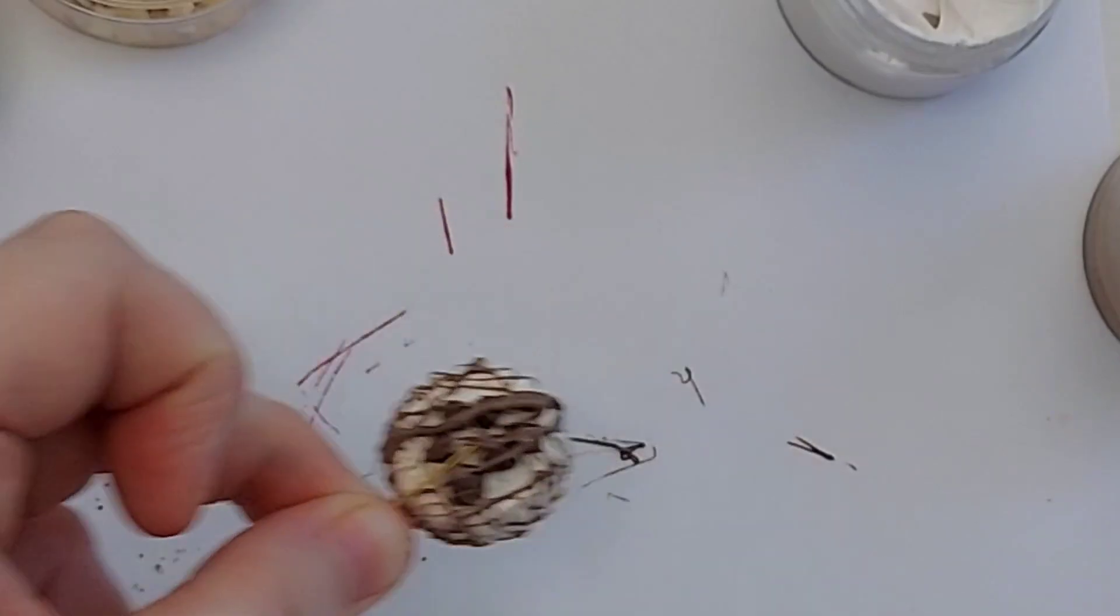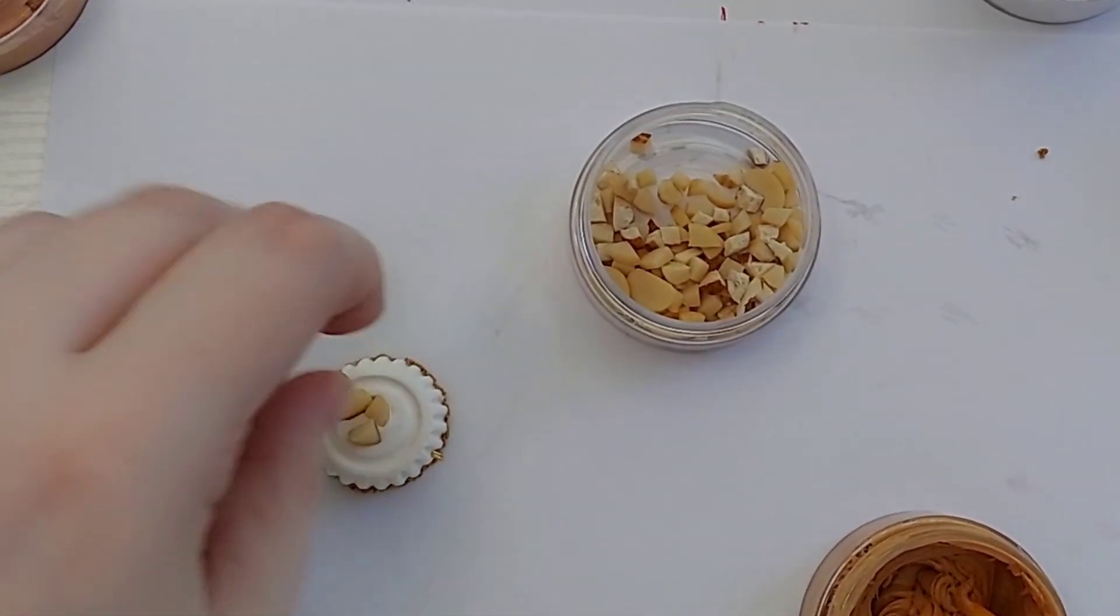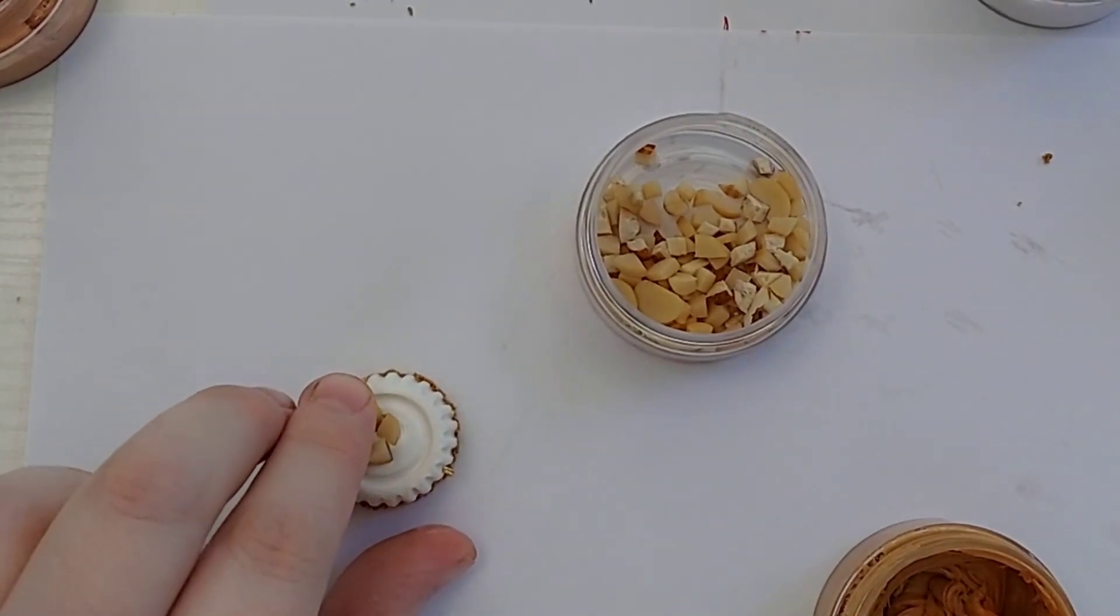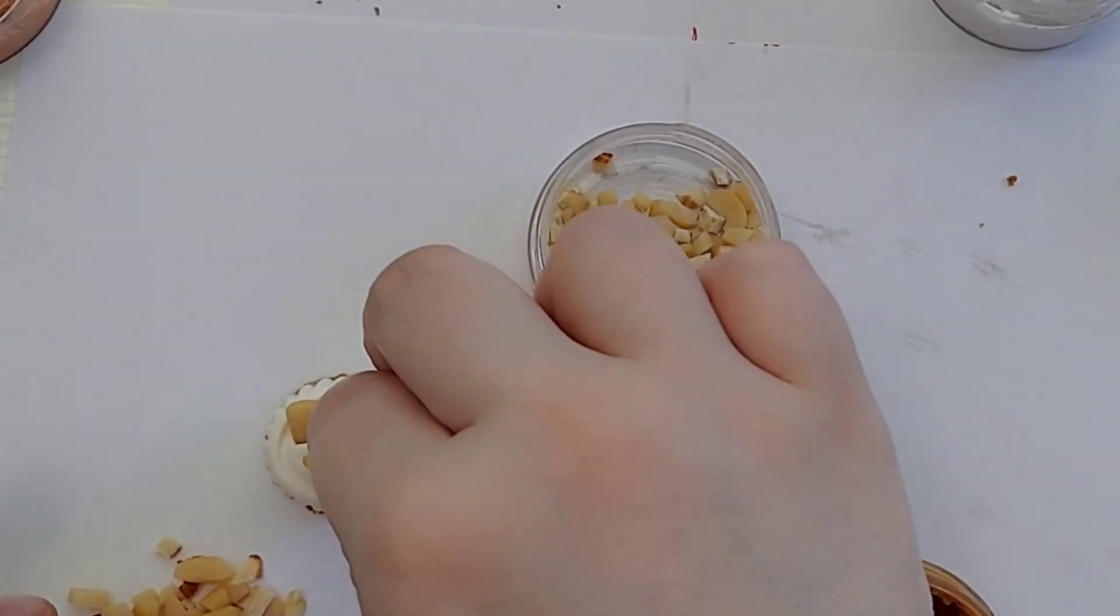Now for the peanut butter one, all I did was add some nuts and I pushed them down inside. You want to make sure that they're in there pretty snug just so they won't come out later. You can also add some oven baked clean adhesive just to make sure they don't come out.